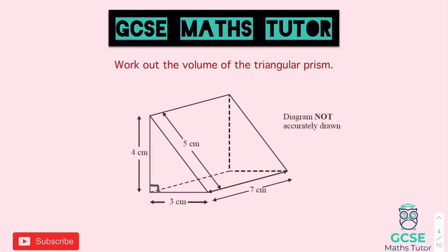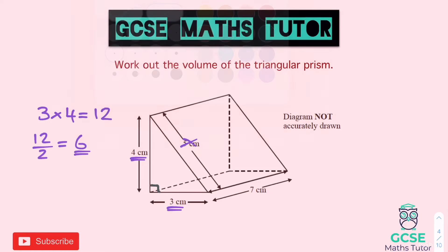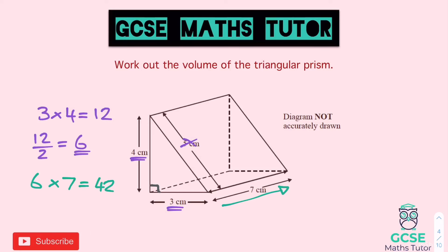For this one we have a base of 3 and a height of 4 — we don't need the 5, the hypotenuse. To get the area of the triangle: 3 times 4 is 12, and not forgetting to halve it, 12 divided by 2 gives us an area of 6. Now we identify how far it goes through — in this case 7 centimetres. So 6 times 7 is 42, and the units are centimetres, so the answer is 42 centimetres cubed.